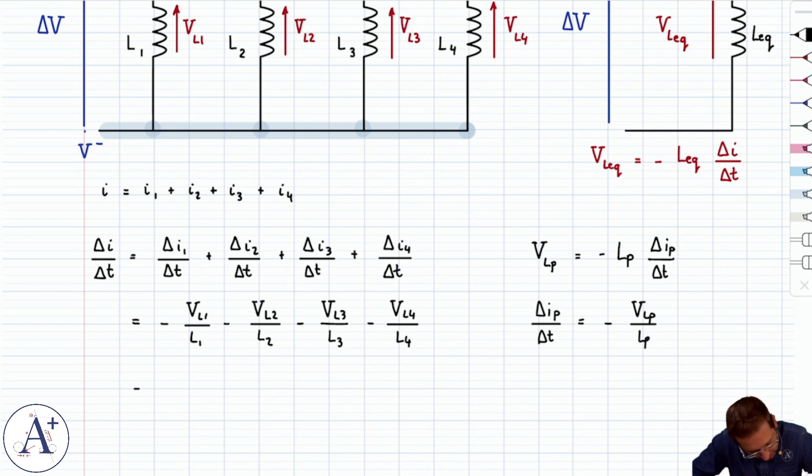So we can rewrite the same thing here simply with delta V as the numerator for each fraction, which means that eventually we're going to be able to factor out delta V because it's going to be a common factor. So we're going to get delta V over L1 minus delta V over L2 and so on and so forth, all the way to minus delta V over L4.